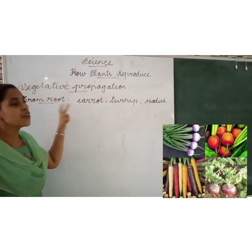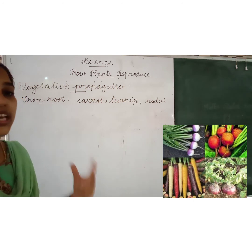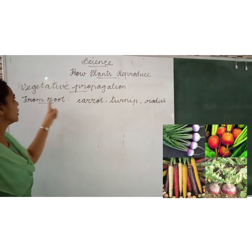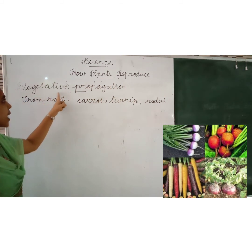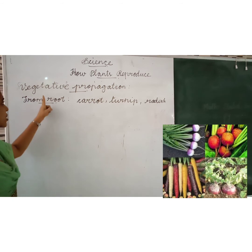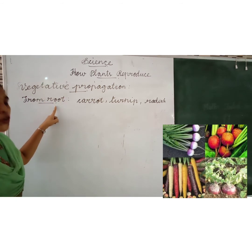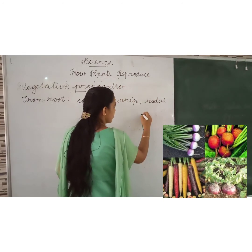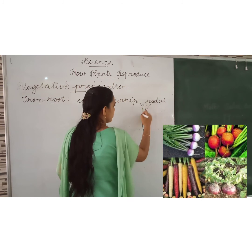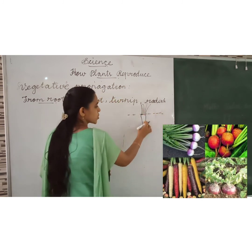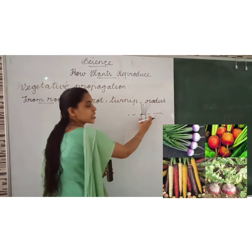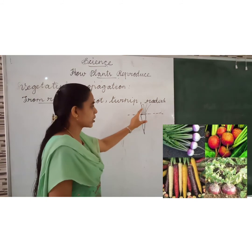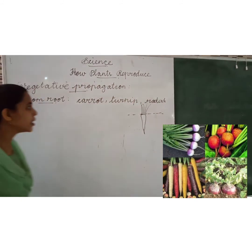These roots are very fleshy and strong. Because of that, the roots grow into a new plant. This is the type of vegetative propagation where some plants grow through the roots. For example, the root of the carrot is very fleshy and strengthened, and from there a new plant will grow.